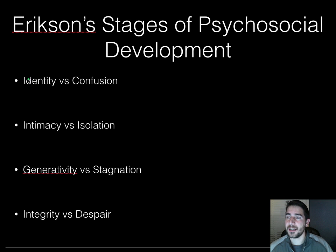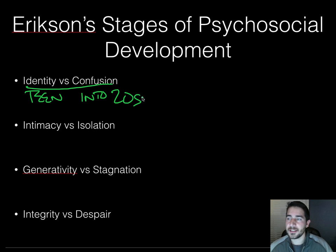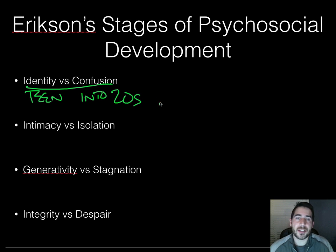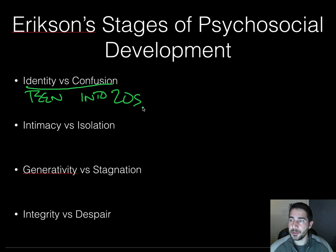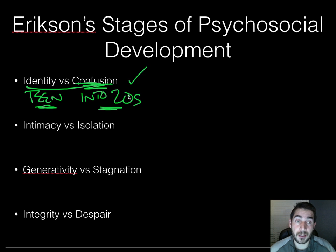Stage five is identity versus confusion, from your teen years all the way into your twenties. Erikson says right now you're working on refining a sense of self by testing your roles and integrating them to form an identity. Basically, you're trying to find out who you are — testing stuff out, changing, deciding who you are. If you're not able to do that, you become confused about who you are, and if you never figure it out by your early twenties, you're going to have a problem.